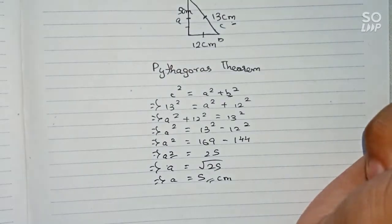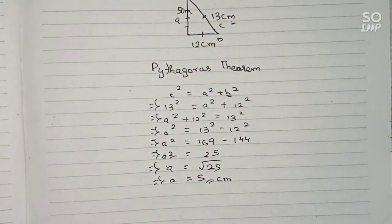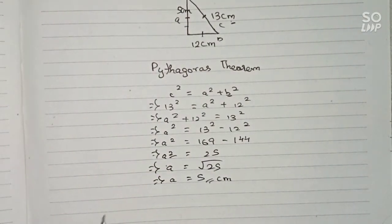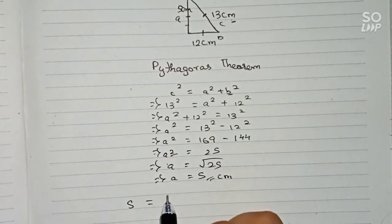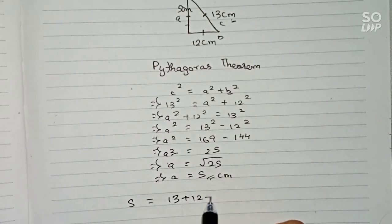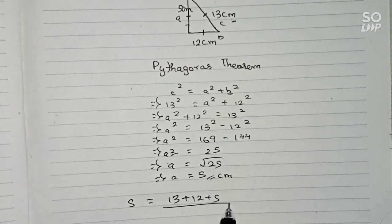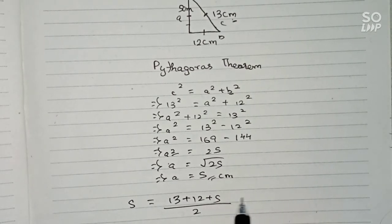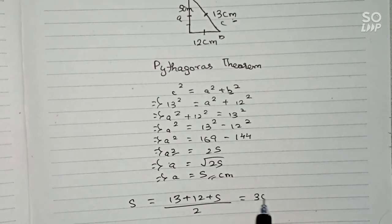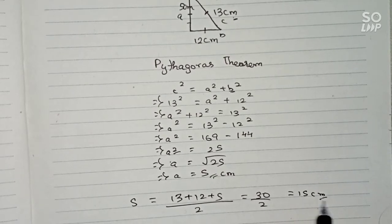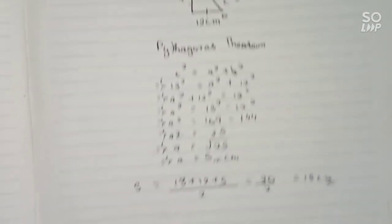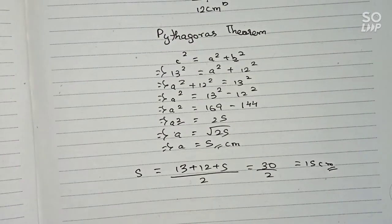Now we can find the area. First, we find s, the semi-perimeter: s = (13 + 12 + 5) ÷ 2 = 30 ÷ 2 = 15 centimeters. So the semi-perimeter is 15 centimeters.